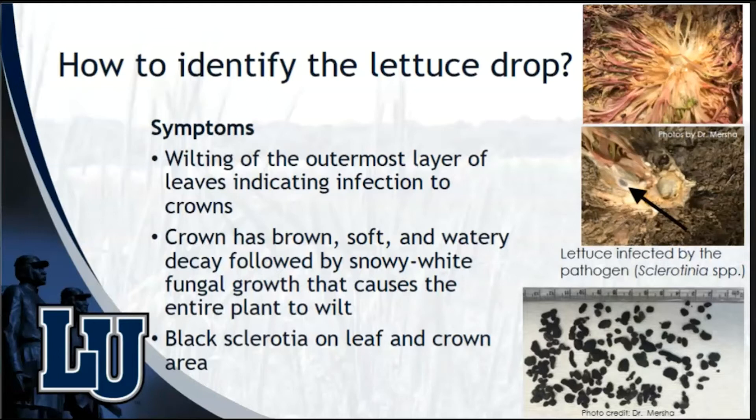You can see the photograph in the upper right corner which indicates lettuce drop symptoms. As the disease advances, you can see in the second photograph on your right side that sclerotia will produce, which are black in color, and eventually more sclerotia will form either on leaves or the ground area. There is a photograph in the bottom right corner along with a ruler so you can imagine how big or small the sclerotia could be.